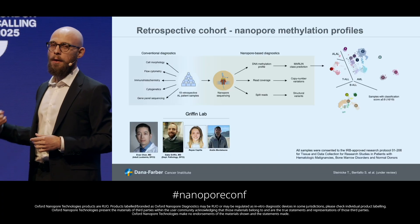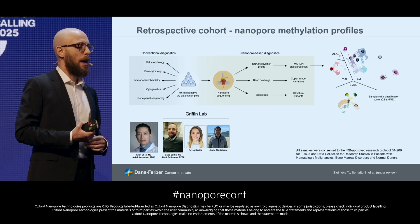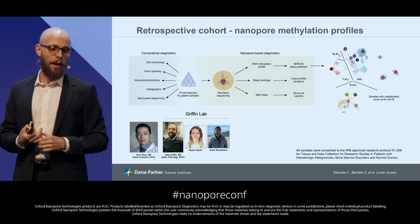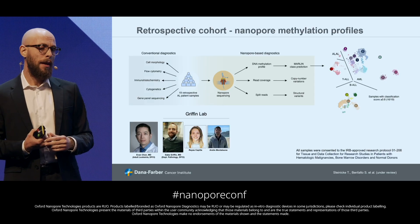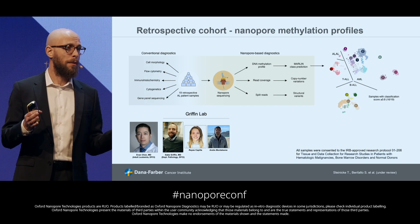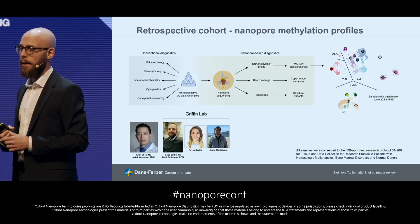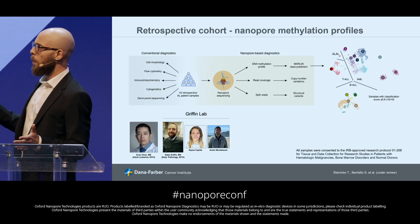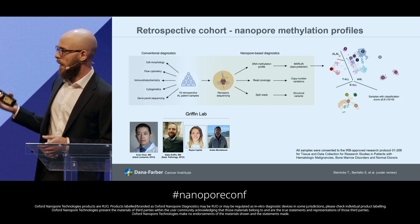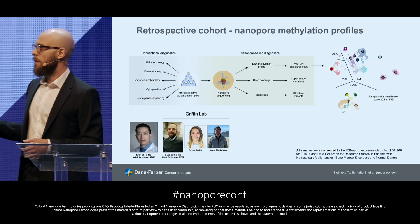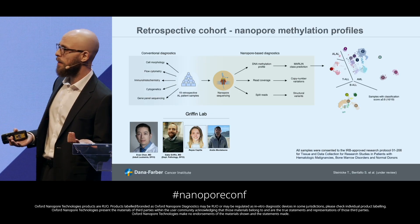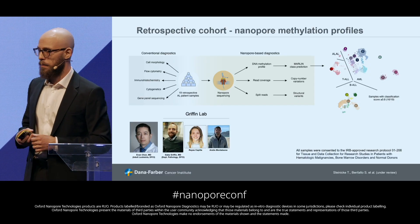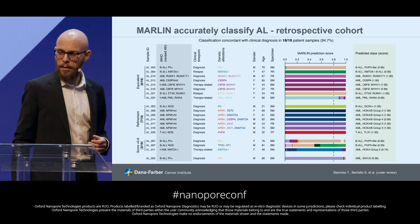We then wanted to test MARLIN on real nanopore sequencing samples. We teamed up with colleagues at Dana-Farber — Evan Chen and the Griffin lab, Gabe Reyes and Andre. We collected a cohort of 19 acute leukemia samples from the biobank for which we already had all information about conventional diagnostics. We performed nanopore sequencing, called the methylation as input for MARLIN, used the read coverage to create copy number profiles, and for some samples did deep sequencing to reveal fusions.